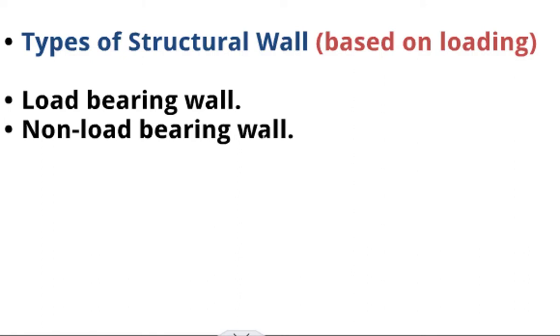Lateral is still the same thing as horizontal. To define an area or to make a demarcation, to provide security and to prevent soil erosion. There are two types of structural wall based on the condition of loading: one, we have the load-bearing wall; and two, we have the non-load-bearing wall.